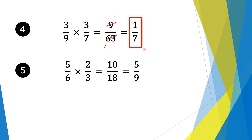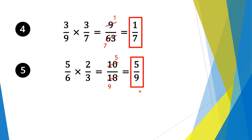Moving on to question 5. We have 5/6 times 2/3. So again, we multiply the numerators first: 5 times 2 is 10. And then we times the denominators: 6 times 3 is 18. Now top and bottom is divisible by 2. 10 divided by 2 is 5, and 18 divided by 2 is 9. So our solution is 5 over 9.